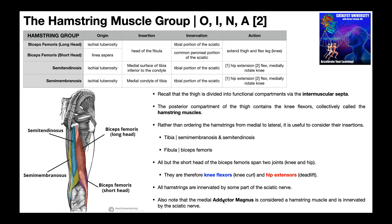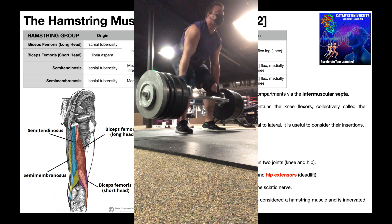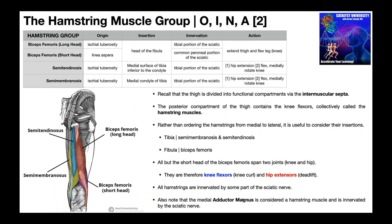Another muscle sometimes grouped with the hamstrings is adductor magnus. It's not the whole muscle — adductor magnus has two parts: an adductor part and a hamstring part. The hamstring part originates on the ischial tuberosity, so in addition to adducting the hip, it can also extend the hip. The hamstring portion of adductor magnus is also innervated by the sciatic nerve. So in exercises like the deadlift, not only are the glutes and hamstrings working, but the adductor magnus is as well, by virtue of its origin on the ischial tuberosity.